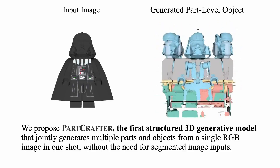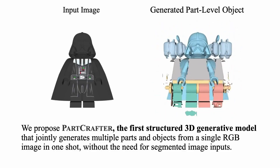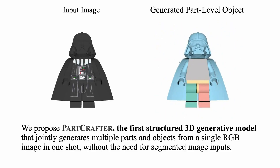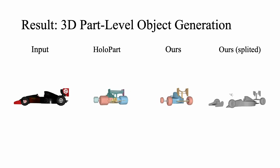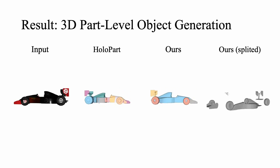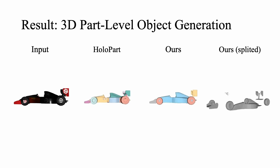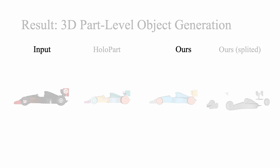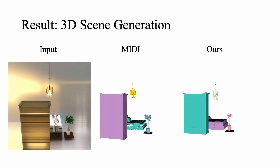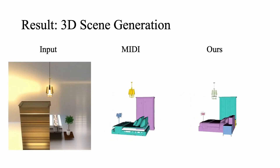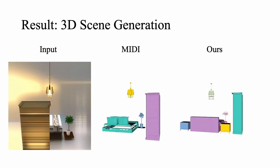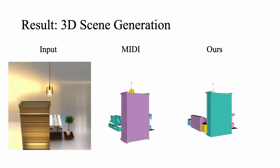What if a single photo could give you a fully editable 3D scene? Not just a shape, but distinct, meaningful parts you can modify, animate, or reuse. ByteDance and Carnegie Mellon just released PartCrafter — an AI model that turns one image into structured 3D parts in seconds. Unlike existing tools that generate a single 3D blob or require multiple steps, PartCrafter does it all in one shot.